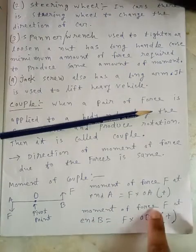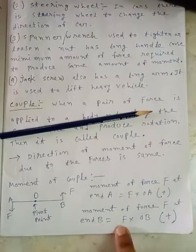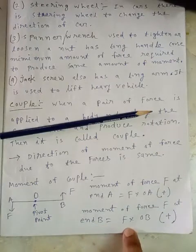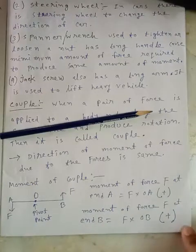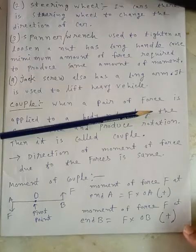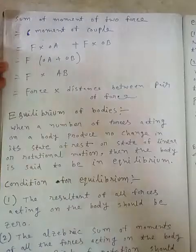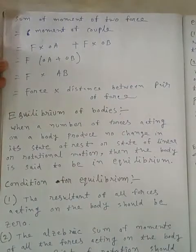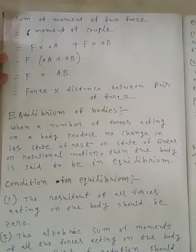Now moment of force F at point B is F multiplied by OB. This is also positive because this is also anticlockwise moment. Now we have to sum the moment of two forces.